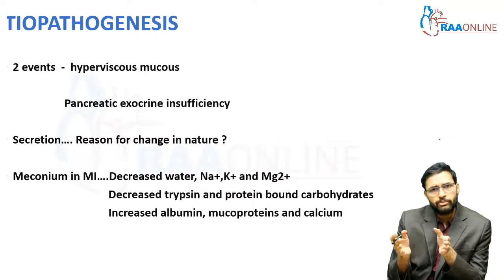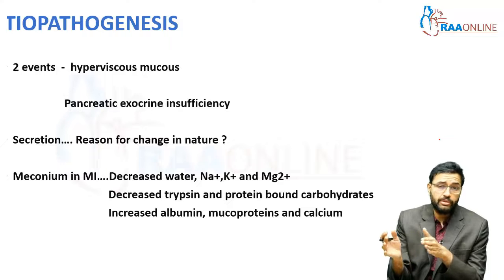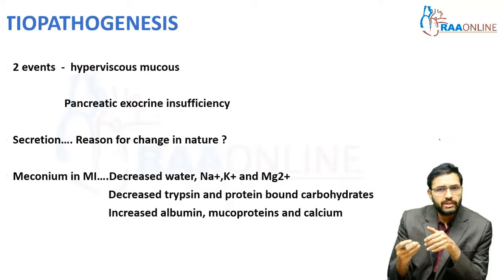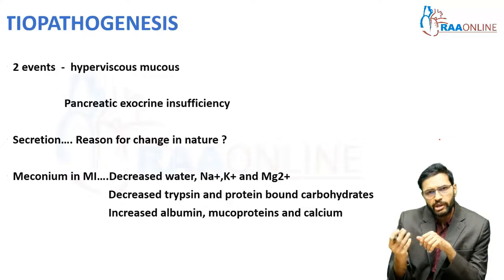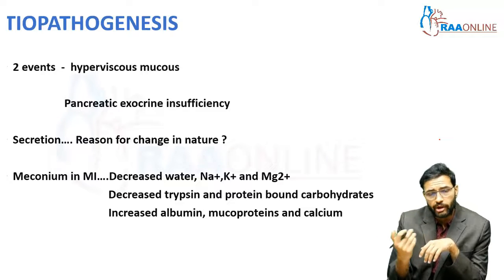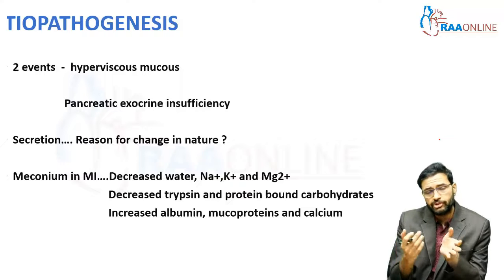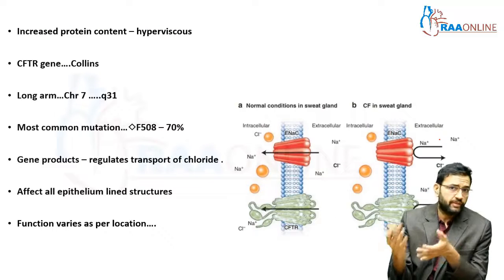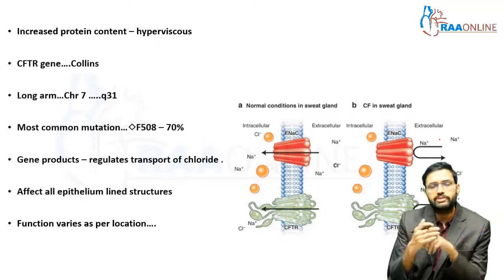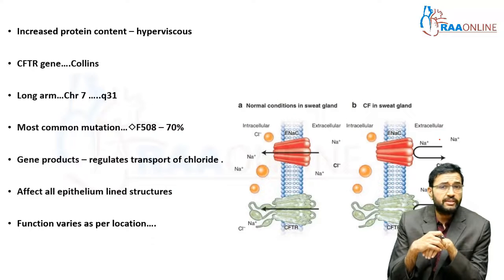The mucus secreted by the intestinal glands is thick because its composition is completely altered. Meconium in a child with meconium ileus has decreased water, sodium, potassium, magnesium, decreased trypsin, and decreased protein-bound carbohydrates. On the other hand, it has increased albumin content, mucoproteins, and calcium. The high protein content is the primary reason the meconium is very thick in the first place, and it becomes thicker subsequently. In fact, protein content can be as high as 70 to 90% in a child with meconium ileus compared to only 7% in a normal child.